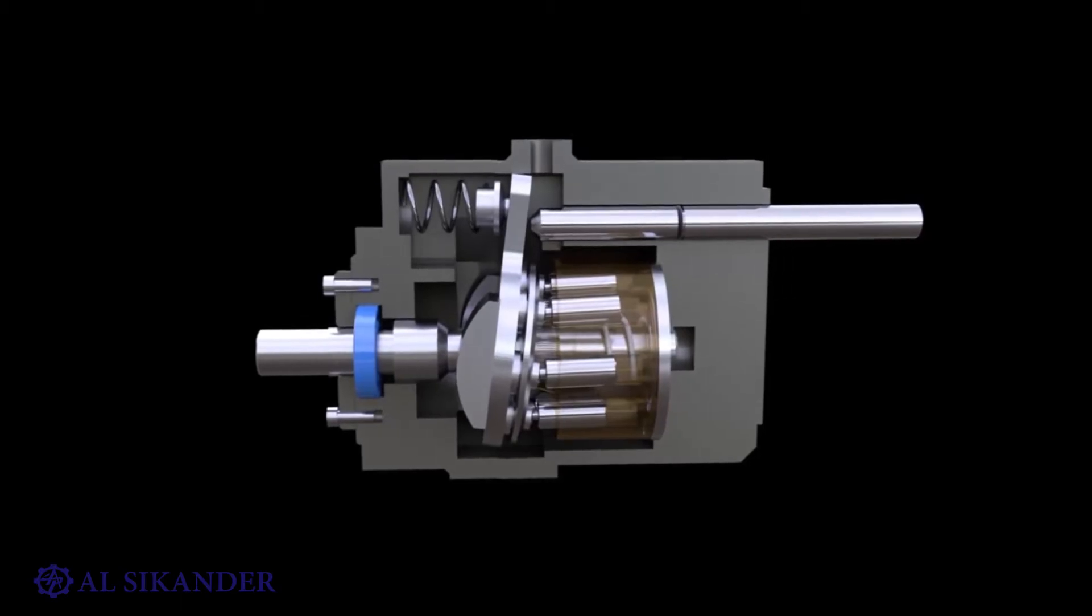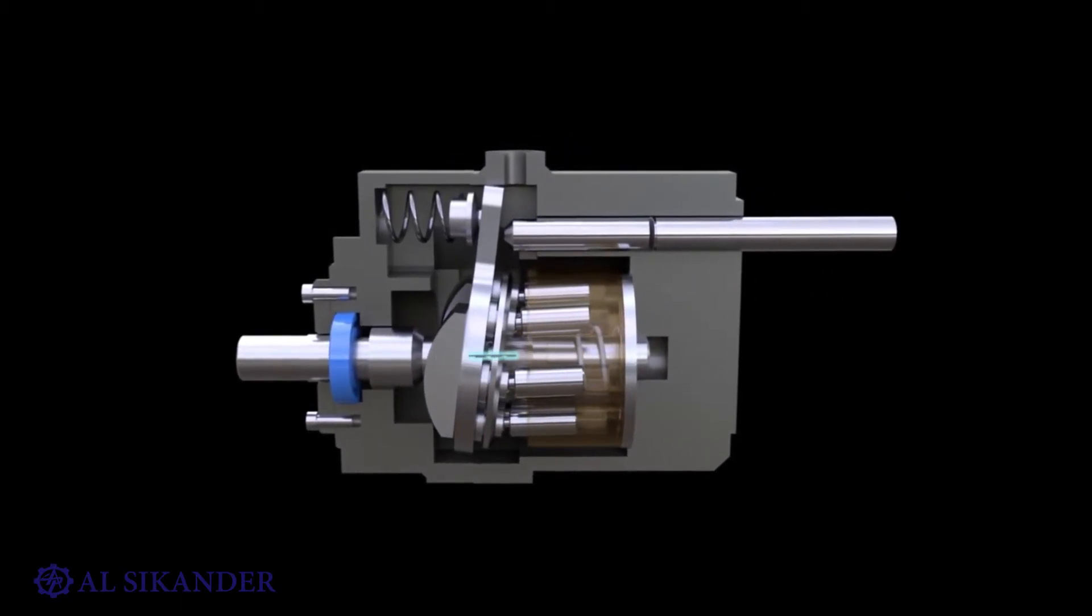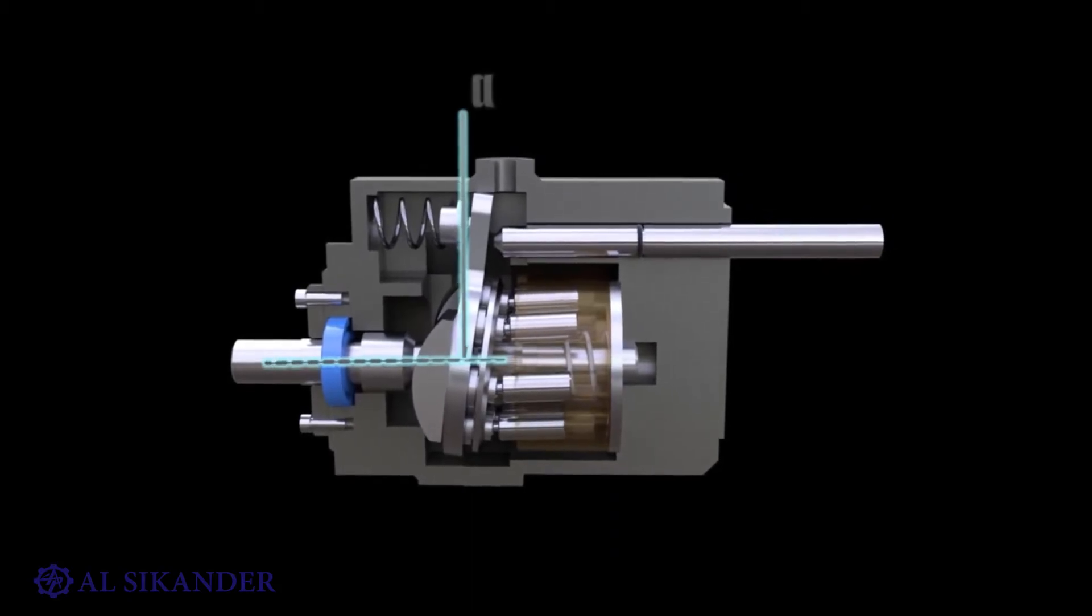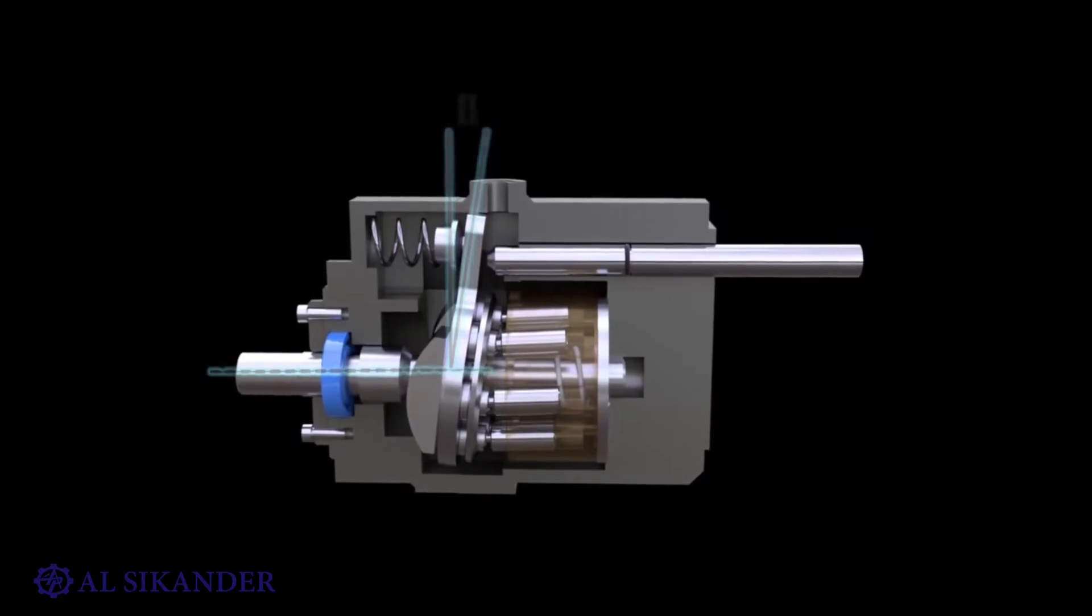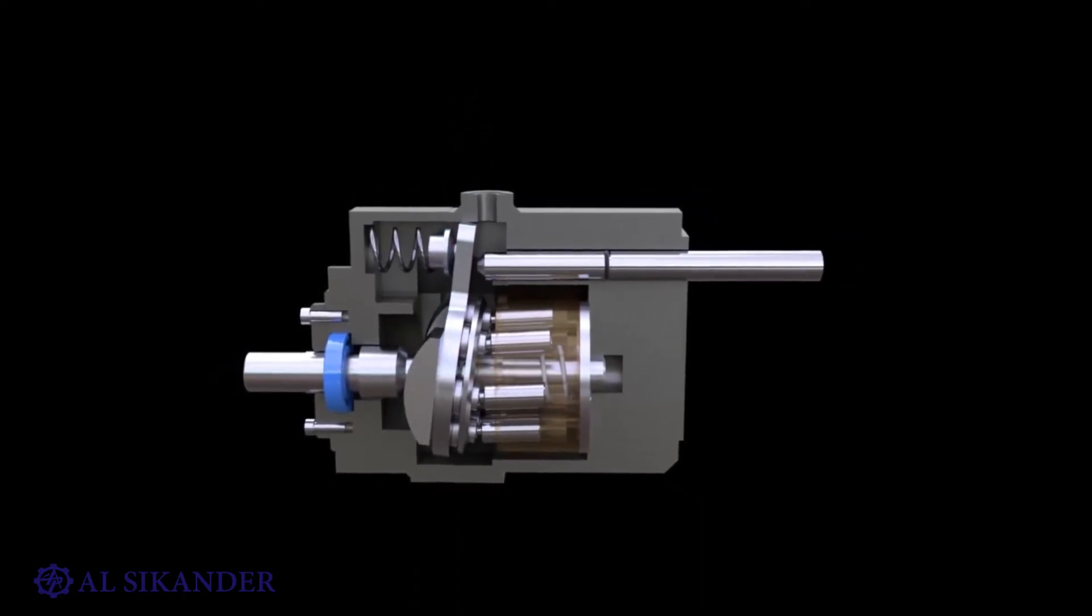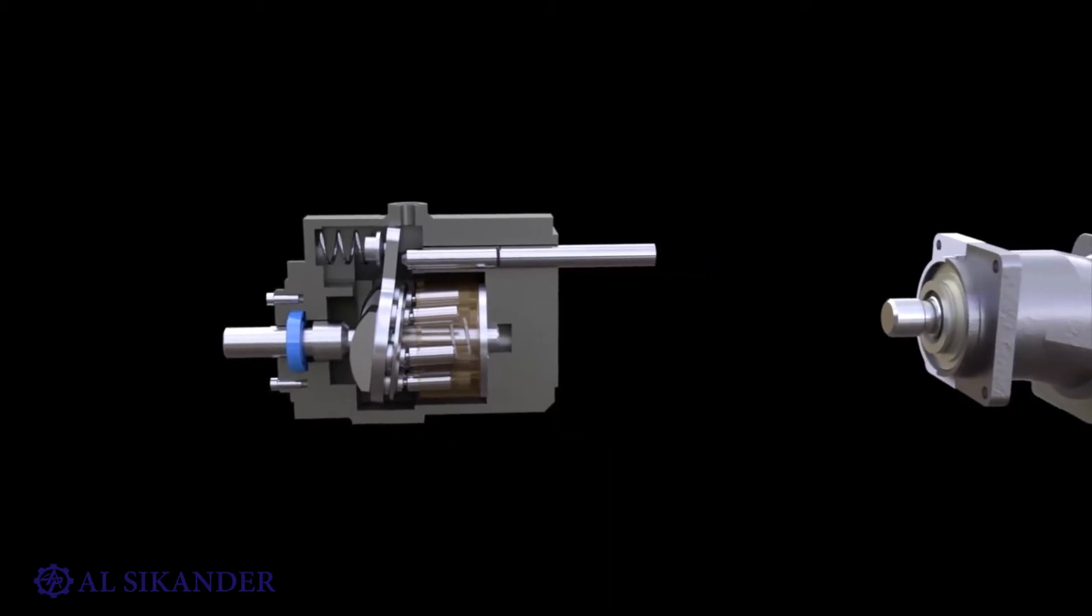The pistons rotate together with the drive shaft. To convert the rotary motion of the shaft into translational motion of the pistons, it is possible to tilt the block or tilt the washer on which they rest. In the first case, hydraulic machines are called pumps with a tilted block, in the second case with a tilted disc.